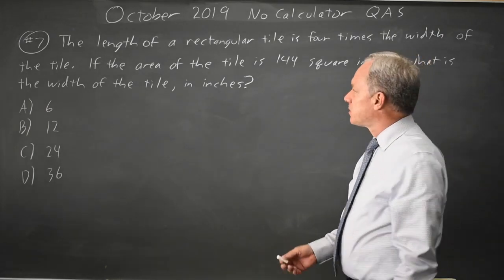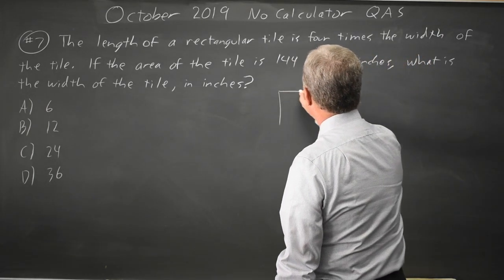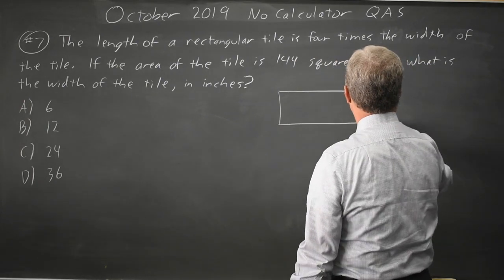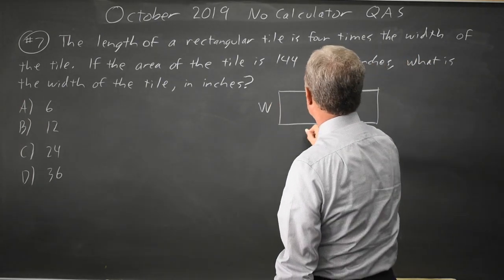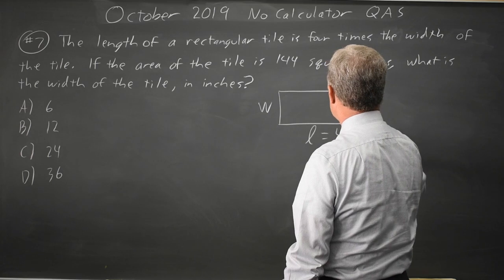This is question 7. College Board is giving us a geometry problem where we have a rectangular tile and the length is 4 times the width.